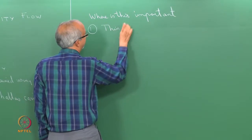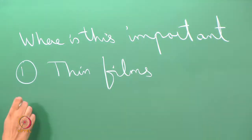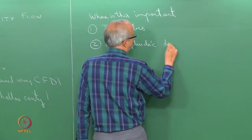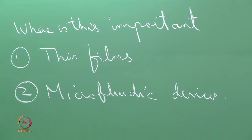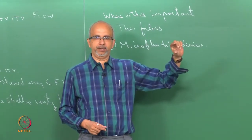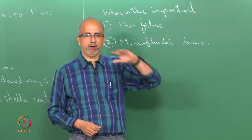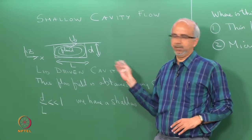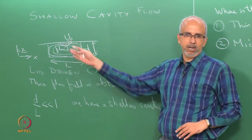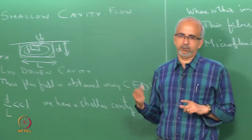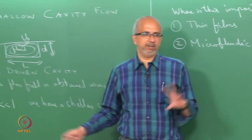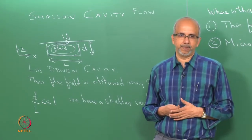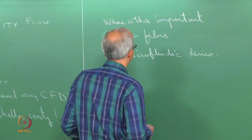For example, you can have thin films, or you can have microfluidic devices. Suppose you have a very thin film of liquid on a solid surface and either the lower surface is moving or the upper surface is exposed to atmosphere. The presence of these two length scales, with d/L being very much less than 1, gives us a small parameter epsilon. We can use this epsilon for simplifying the equations and getting some insight.